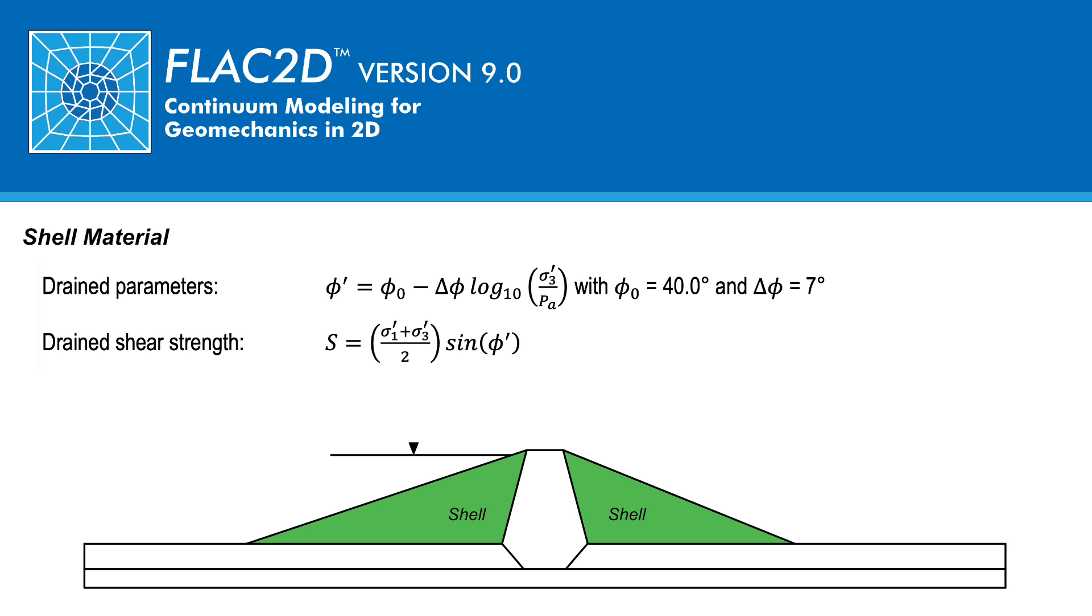Note that this shear strength S will be set equal to the cohesion parameter in the UBC-Hiss model and will be calculated zone by zone based on the pre-earthquake state of stress. Correspondingly, the friction angle parameter in the UBC-Hiss model is set to zero.